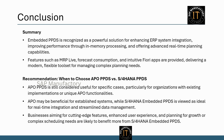Let's wrap up by summarizing the key benefits of S4 HANA embedded PPDS. Embedded PPDS enhances integration with ERP systems, improves performance through in-memory processing, and offers advanced real-time planning capabilities. Features like MRP Live, forecast consumption, and intuitive Fiori apps provide a modern, flexible toolset for complex planning needs. While S4 HANA embedded PPDS is ideal for real-time integration and streamlined data management, APO PPDS can still be effective for certain use cases — organizations with existing APO implementations or needing unique APO functionalities may find it beneficial to continue.